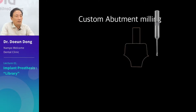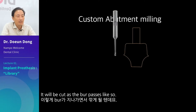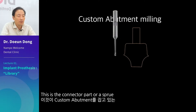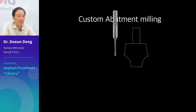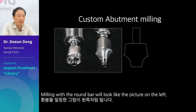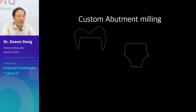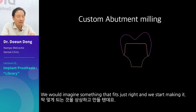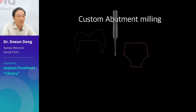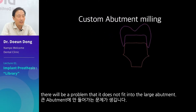There is a problem, however. This is a picture taken during custom abutment milling — it will be cut as the burr passes. You will see something protruding on top — this is the connector part or sprue holding the custom abutment, and it will always remain. Milling with the round bar will look like the picture on the left. The problem is how good the burr is in the milling machine. If the burr is worn out, it will cut excessively. Then, if a zirconia crown is made and fitted later, there will be a problem that it does not fit into the large abutment.